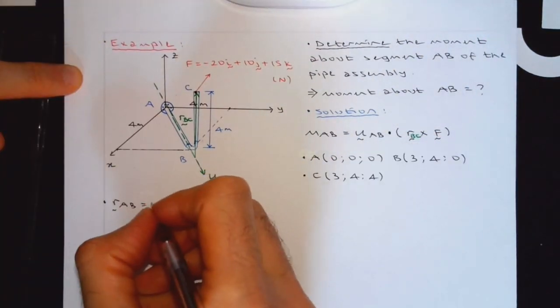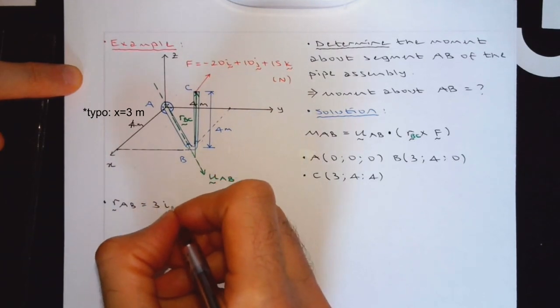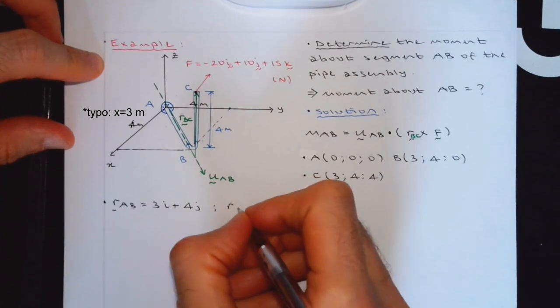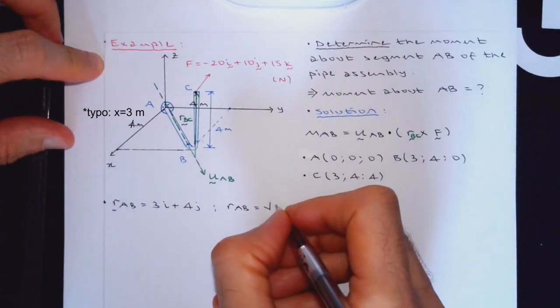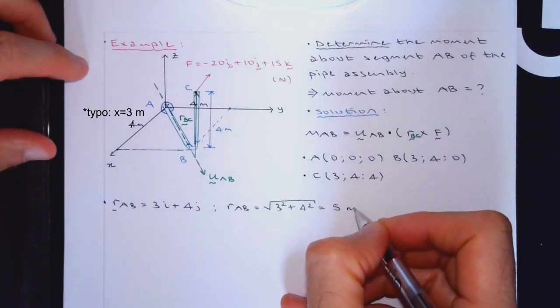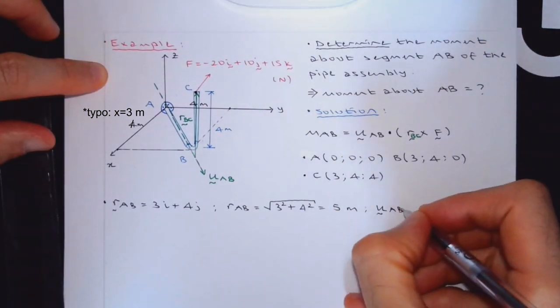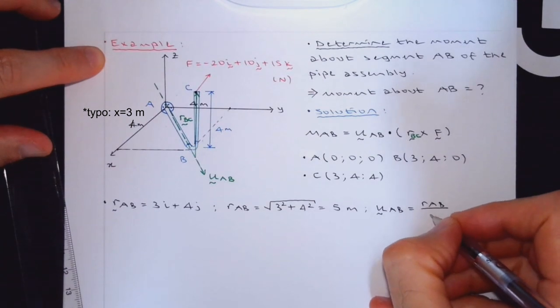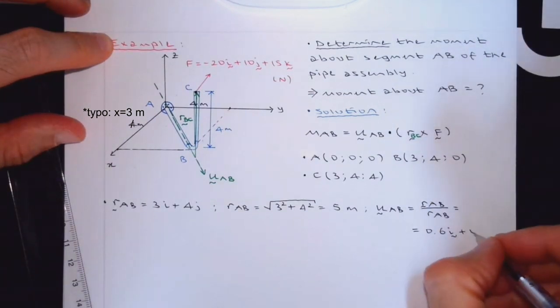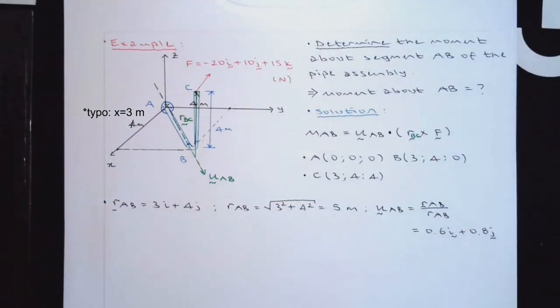If you go with AB, you are going to have 3i plus 4j. Magnitude of this, Rab, square root of 3 square, 4 square, and you know it's 3, 4, 5. This is 5 meters. Uab is going to be Rab divided by its magnitude, 0.6i plus 0.8j. All right. So this is Uab. So I got this Uab.